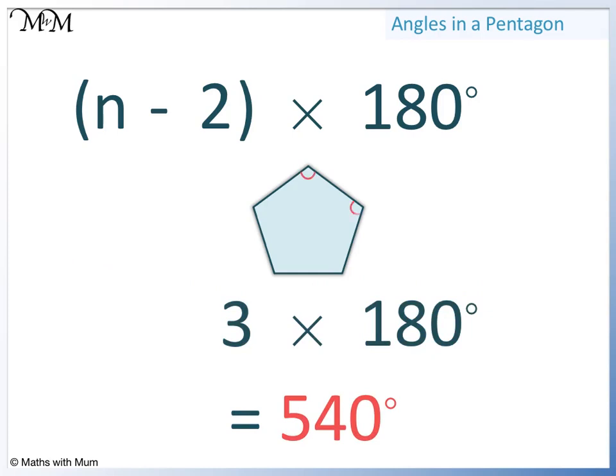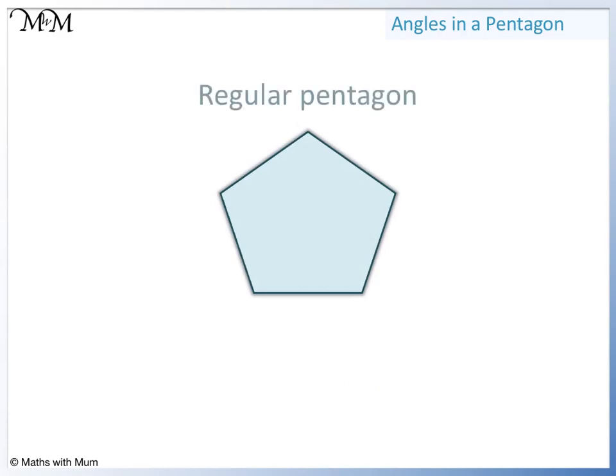So if you add up all of the angles in a pentagon, they will equal 540 degrees. Here we have a regular pentagon. Regular means that all of the angles are the same size. So we can work out what each angle is. They all add up to 540 degrees.